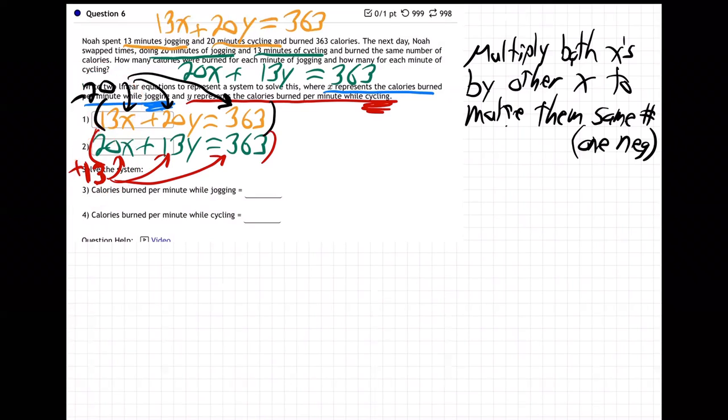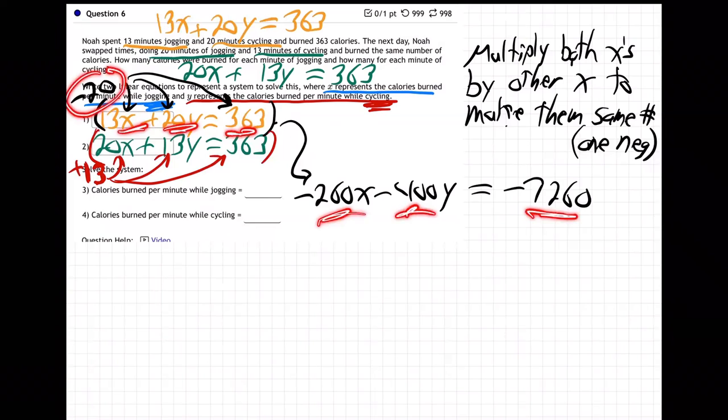So now let's see what we got. So this one will become, 20 times 13, minus 260X minus 400Y, and the other side is minus 7260. So that's minus 20 multiplied all three of those making all three negative.